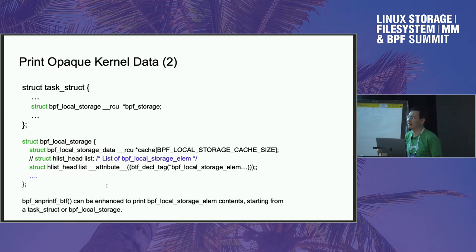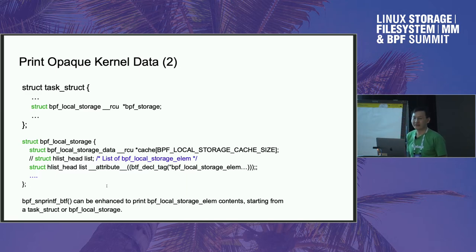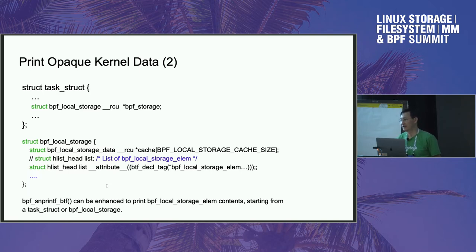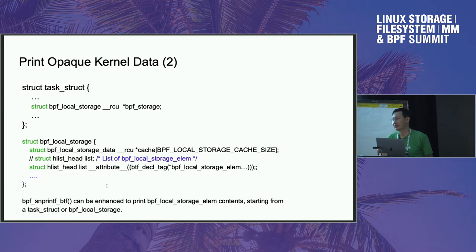The generic helper calls a function in the kernel module. The user-level program and kernel module have to agree on what they are calling — the function name and the arguments provided. If that's inconsistent, there will be issues.